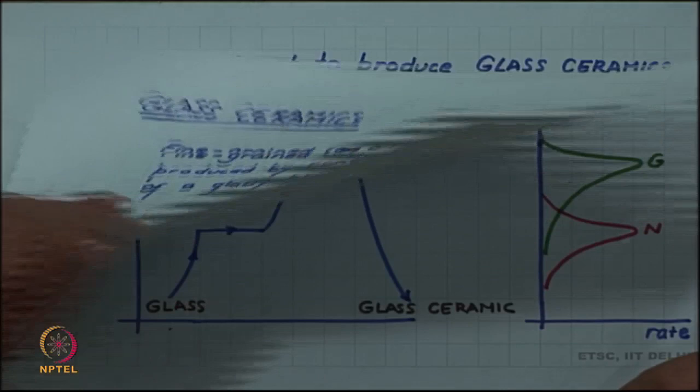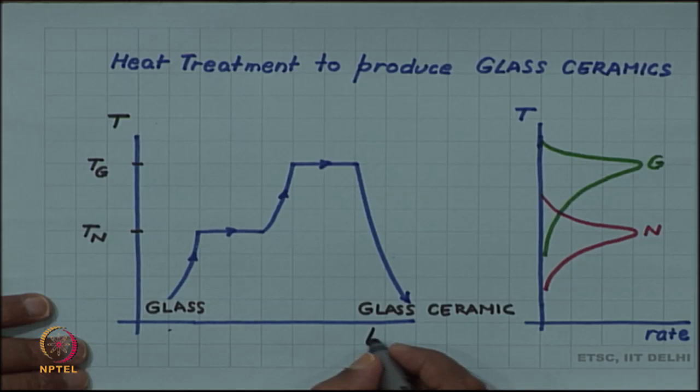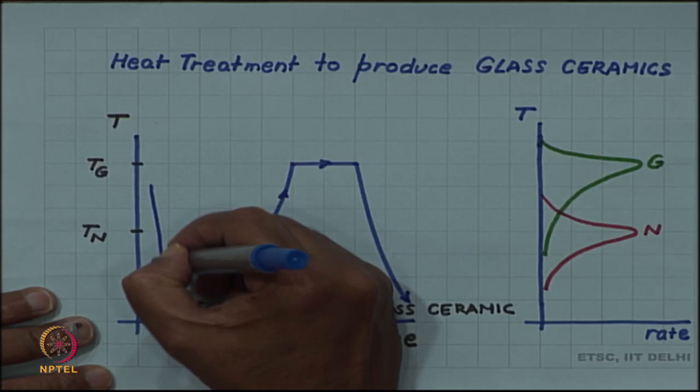Let us look at the heat treatment process for glass ceramic. Here is the temperature time, the first figure is the temperature time figure. It shows the heat treatment cycle. Initially the liquid is quenched to produce glass.